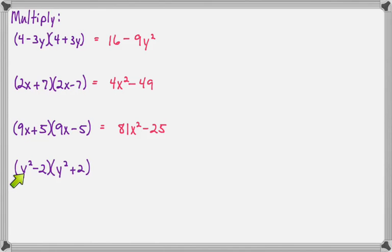And on this last one, first times first will be y squared times y squared, so that's y to the fourth, skip the outer plus inner, last times last is minus 4.